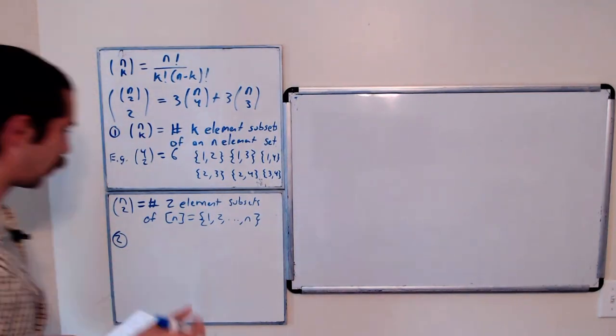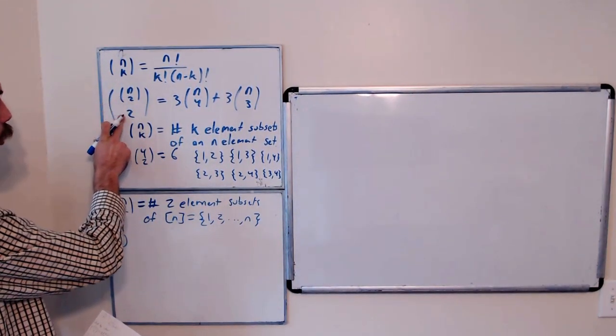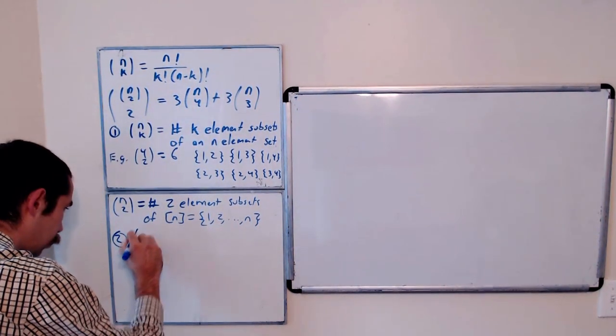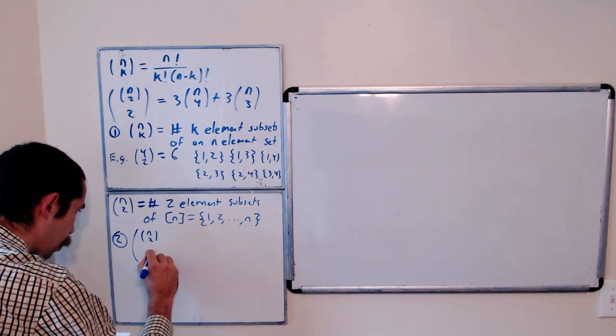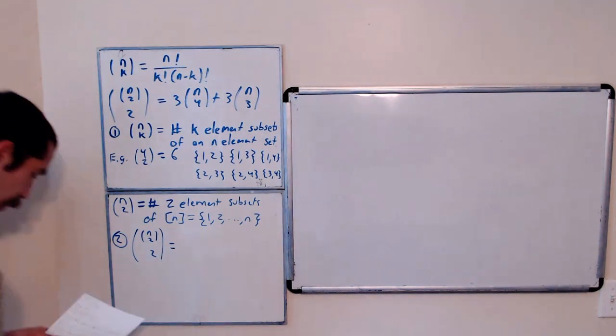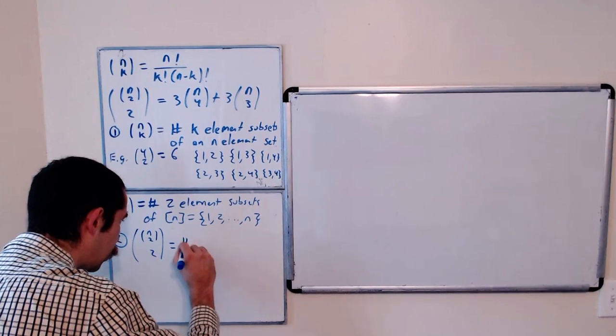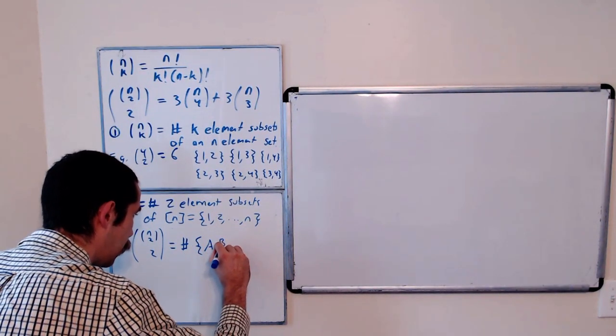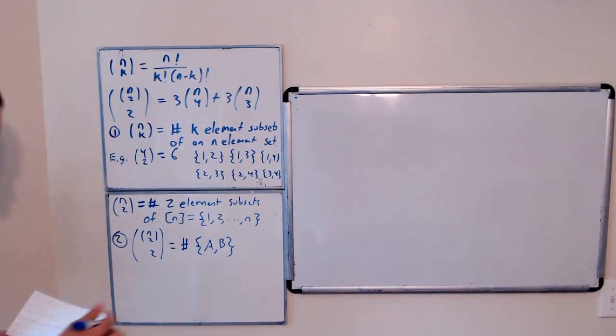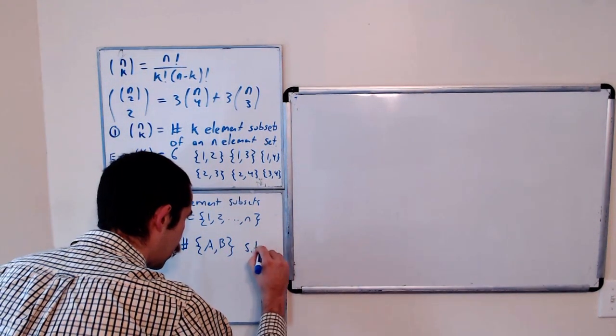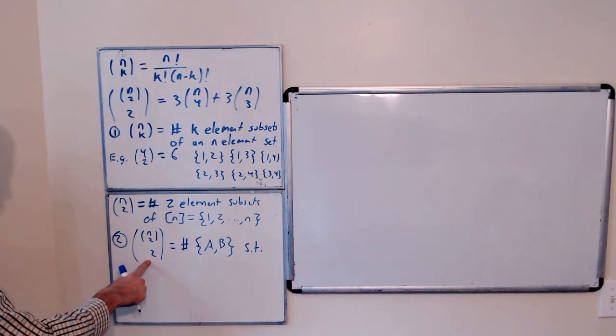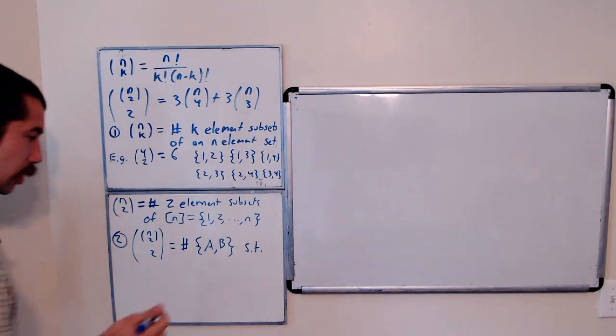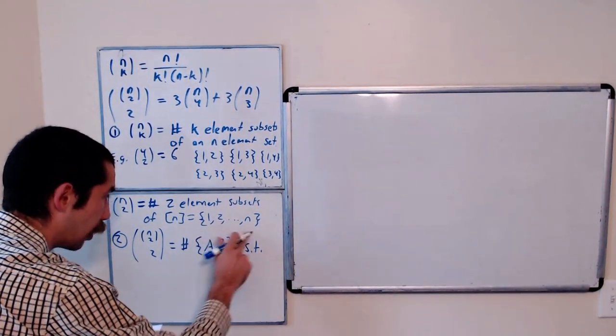So the next fact that we're going to use, or the next observation, is that n choose 2 choose 2, so this left-hand side of our equation, is equal to the number of sets of sets. So we'll call these a and b. These are sets. Such that these are all 2 element subsets. So a and b are both going to be 2 element subsets of 1 through n.